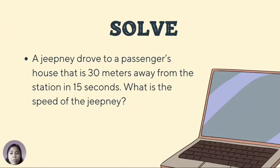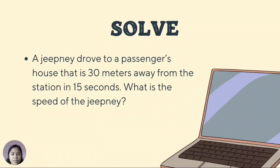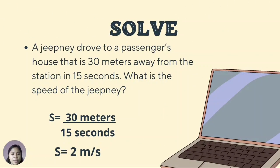You learned in the previous lesson that motion is a change in position with respect to a reference point, while distance is the measure of how far or near two points are from one another. Speed can be calculated by dividing the distance covered by an object in motion by the time spent. Try to answer this word problem: A jeepney drove to a passenger's house that is 30 meters away from the station in 15 seconds. What is the speed of the jeepney? Speed is equal to 30 meters divided by 15 seconds, which equals 2 meters per second.